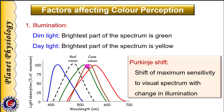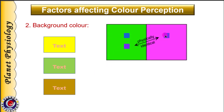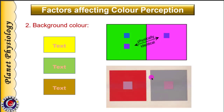Another factor affecting color perception is the background color. The same color appears different on different color backgrounds. For example, the word 'text' written in the same color appears different depending on the background. In another picture, the same blue color appears differently against green and pink backgrounds. A similar difference is seen in pink color appearance against red and gray backgrounds.